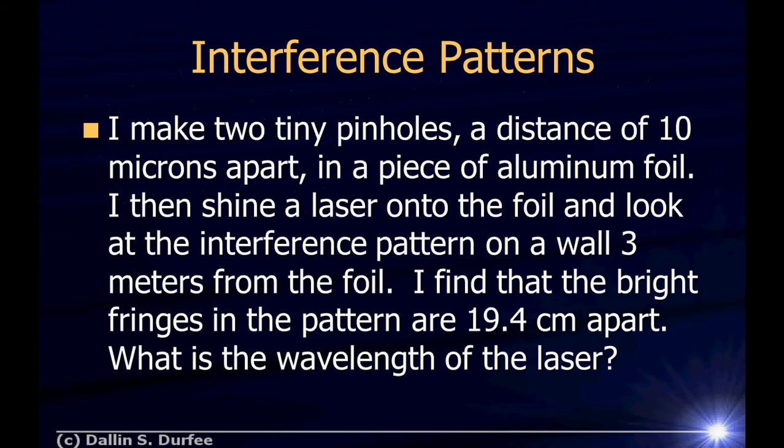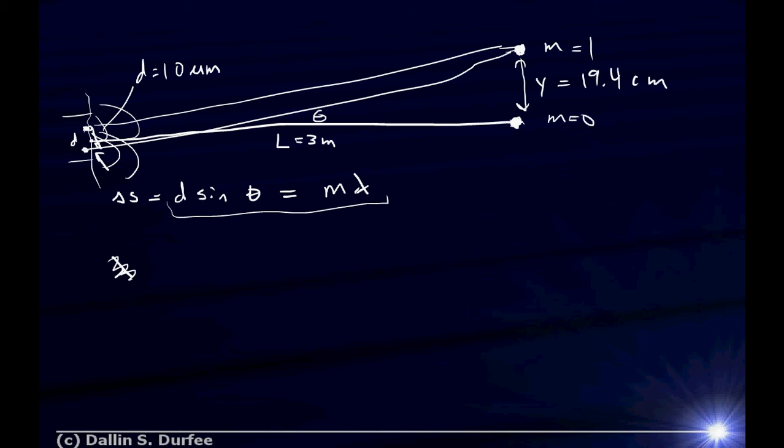So I'll get one fringe at theta equals zero, alright? That's the m equals zero fringe. And the next one is up here at some angle theta, alright? Yeah, so theta for my m equals zero fringe is zero. Theta for my m equals one fringe, what's that going to equal? Well,